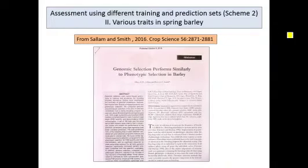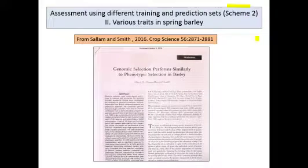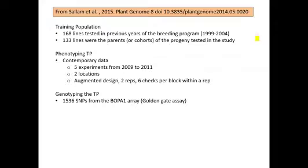Here is the second study we're going to look at. It's actually quite related to the first study, produced by the same group, and is also looking at various traits in spring barley. Here is their training population — the same as we saw in that previous study — with 168 lines tested.